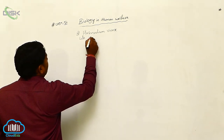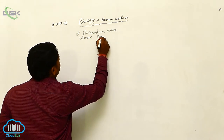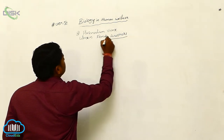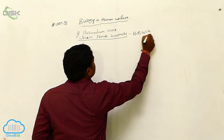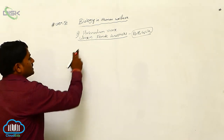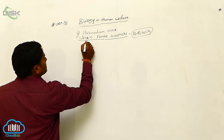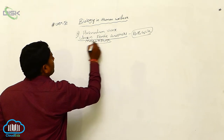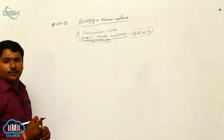Life cycle in female Anopheles mosquito. This is called the Ross cycle, and this is the sexual phase or mosquito phase — the sexual life cycle of Plasmodium vivax in the female Anopheles mosquito.